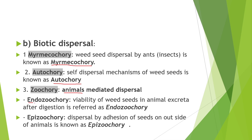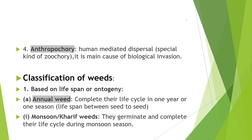Second type is biotic dispersal. When weed seeds are dispersed by ants, it is known as myrmecochory. Self-dispersal mechanism is known as autochory. When weed seeds are dispersed by animals, it is called zoochory. Zoochory is of two types: endozoochory — dispersal through animal excreta, and epizoochory — when weed seeds adhere to the animal's body. Epi means external. Dispersal by humans is known as anthropochory.